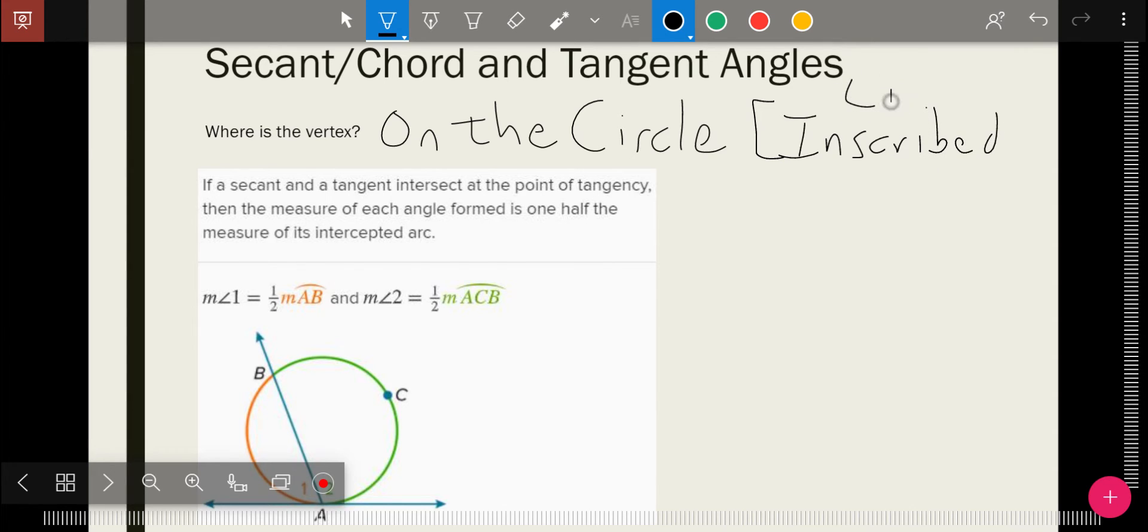It's just like inscribed angles. Because the angle is on the circle, the measure of the angle is just half the arc, or the arc divided by two. It's a little bit weirder to see the arc here than it is in an intercepted angle, but it's the same rule.